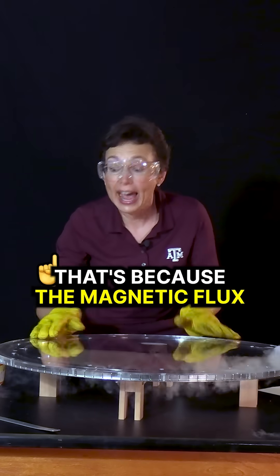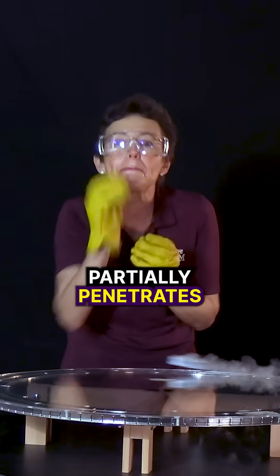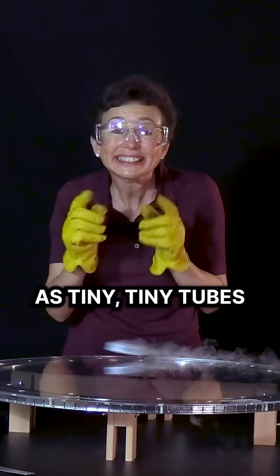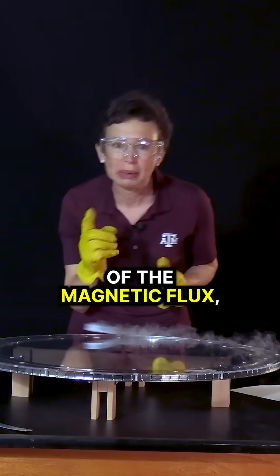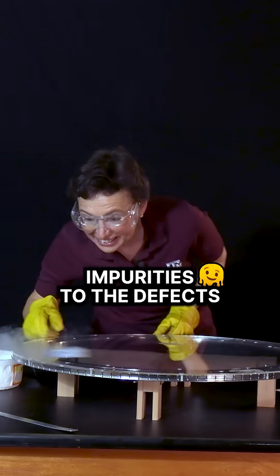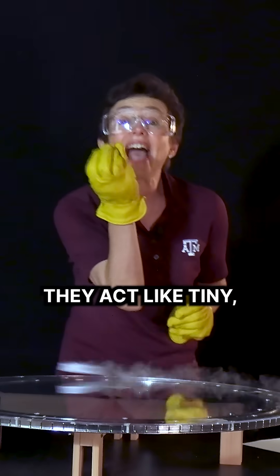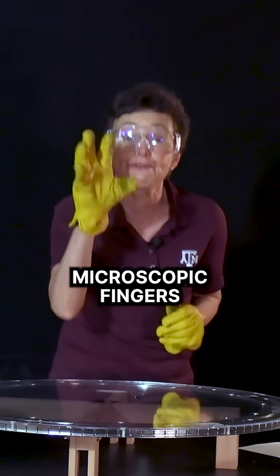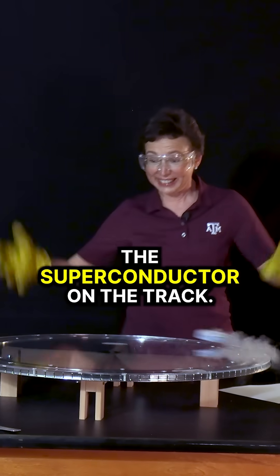That's because the magnetic flux from this magnet partially penetrates the superconductor as tiny tubes of magnetic flux that get pinned to the impurities, to the defects of this superconductor. They act like tiny microscopic fingers that keep the superconductor on the track.